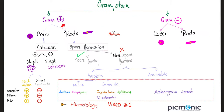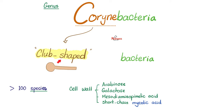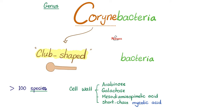Corynebacteria are gram-positive rods. They are non-spore-forming. They happen to be aerobic, yet immotile. The word Corynebacteria means club-shaped. Corynebacteria, as you know, has short chains of mycolic acid, and that's why they are not acid-fast, unlike tuberculosis.